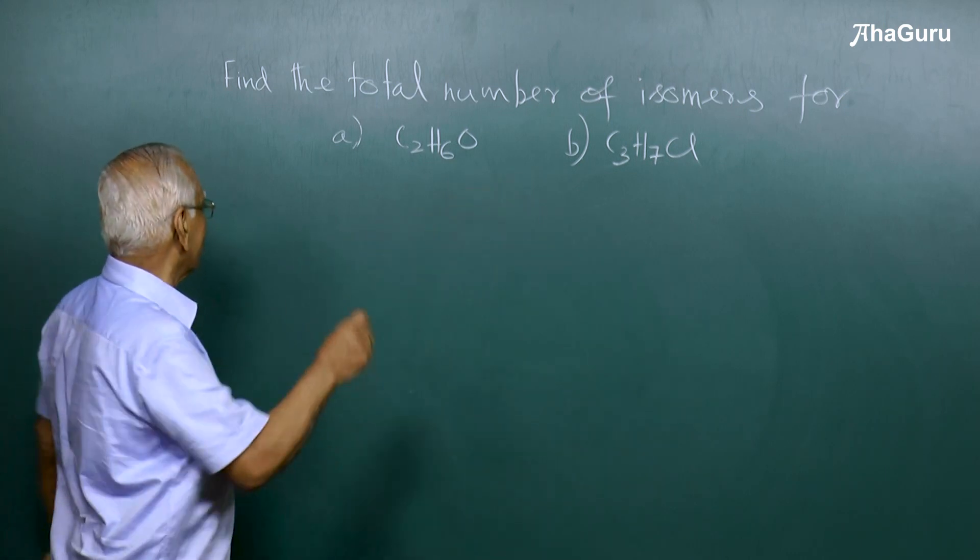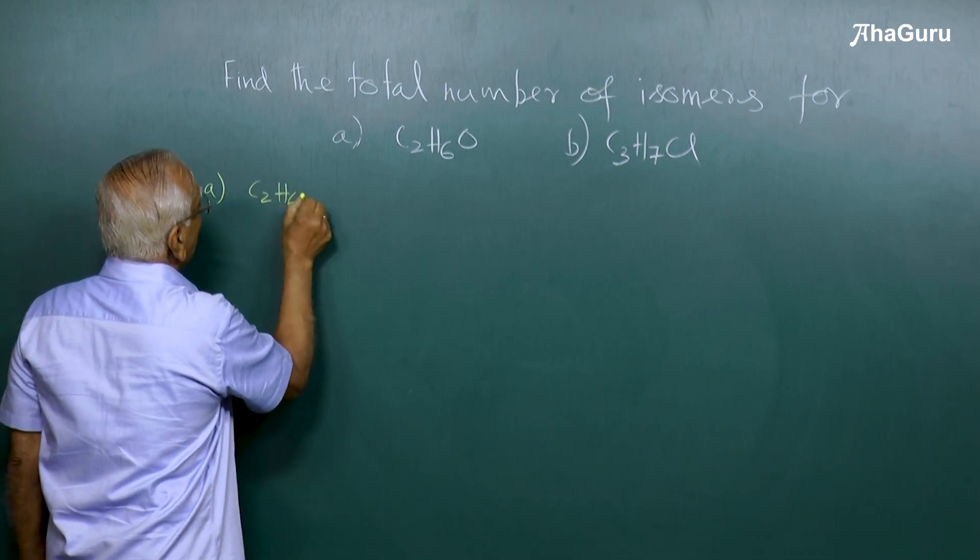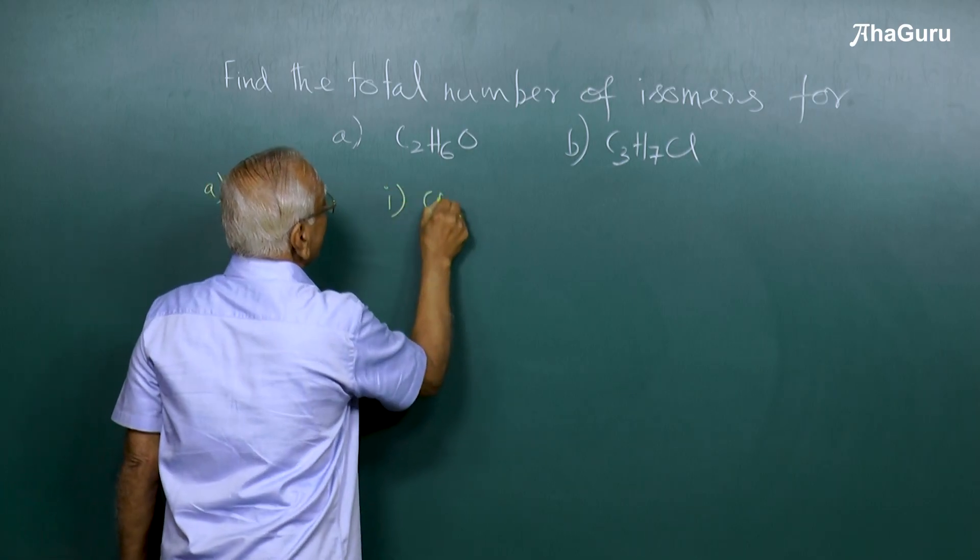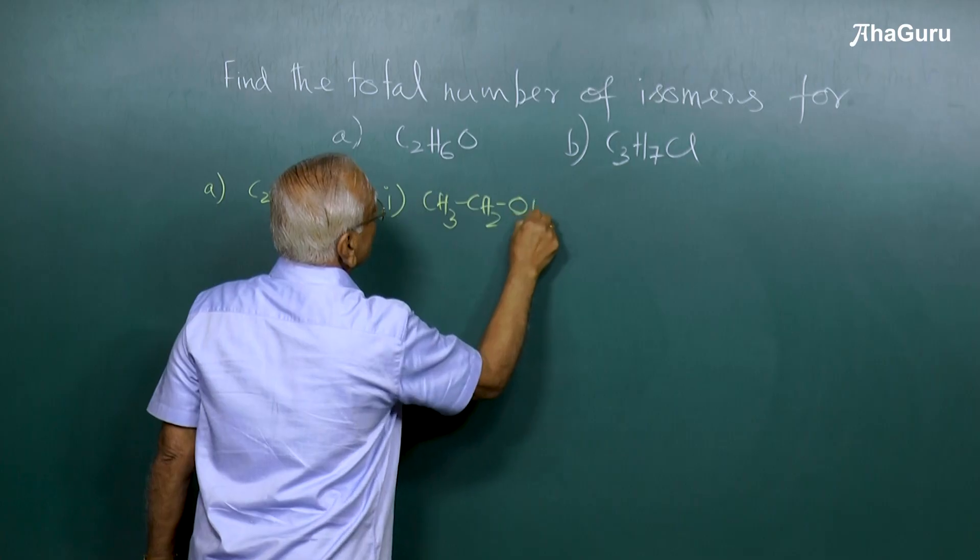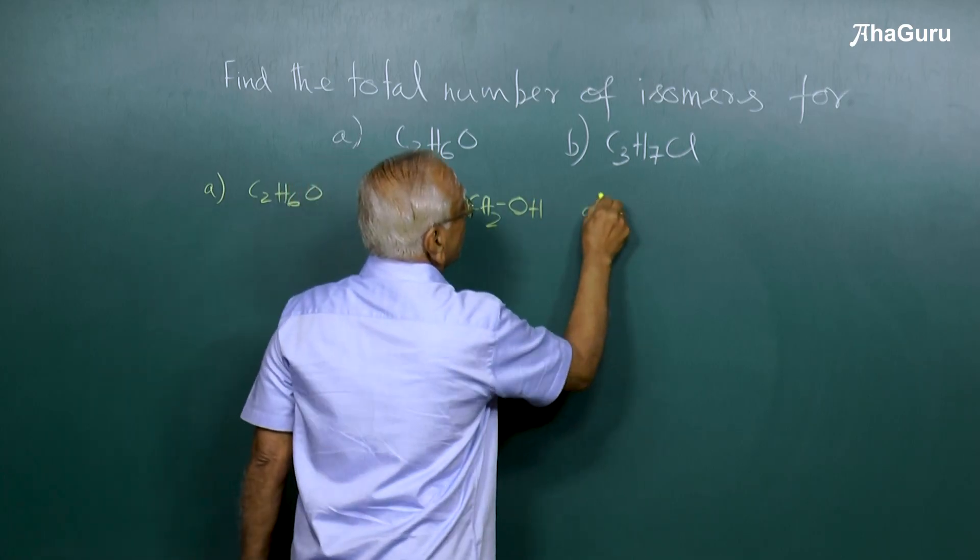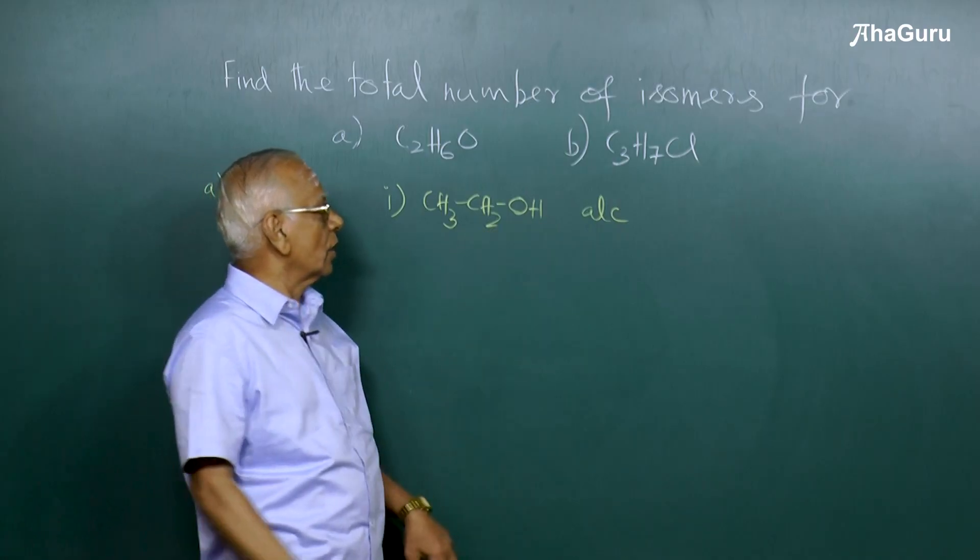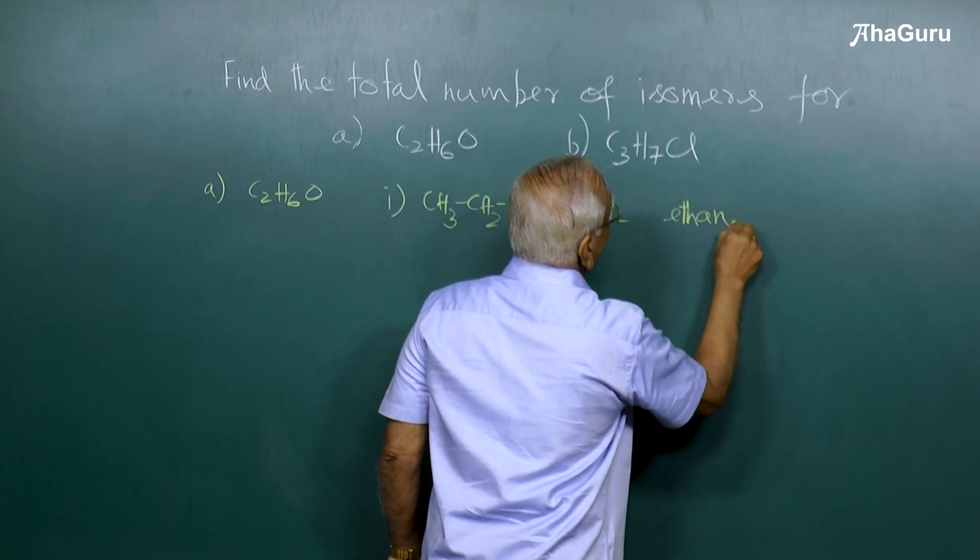For C2H6O, I can draw two structures. One is CH3CH2OH—it's an alcohol. Whenever you have OH, there's a functional group, it's an alcohol. The IUPAC name of this particular alcohol is ethanol.